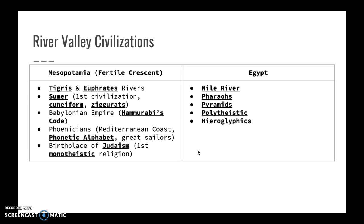In Egypt, the Egyptians developed along the Nile River Valley. They were led by pharaohs whom their people considered gods, establishing religious authority. They built very large pyramids that showed their engineering greatness and served as tombs for their pharaohs. They were polytheistic, having hundreds of gods from the sun god to the god of the underworld. Their writing system was hieroglyphics.